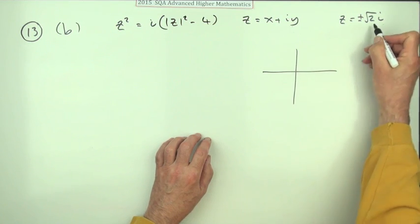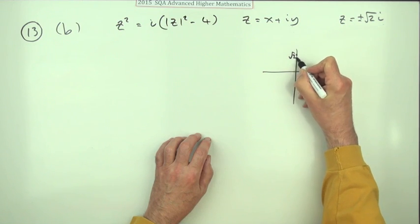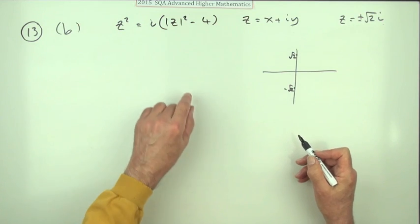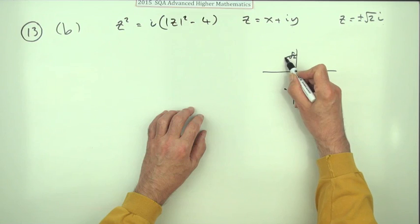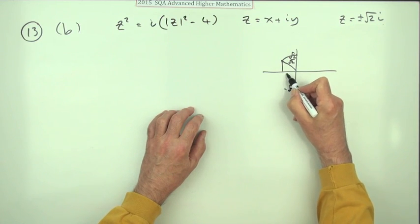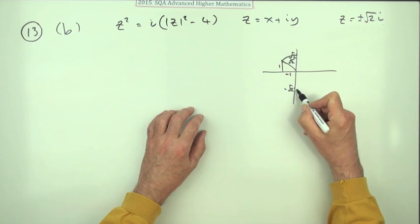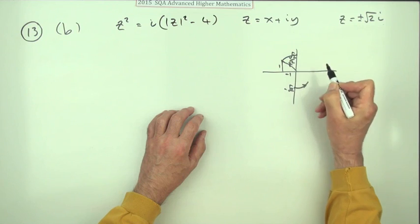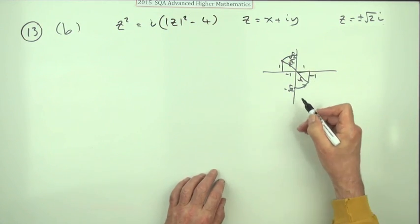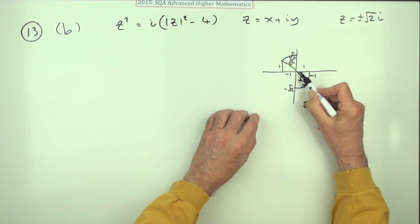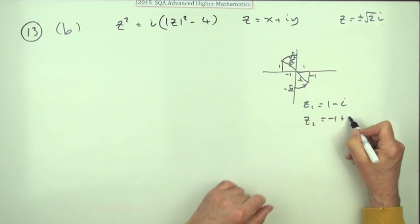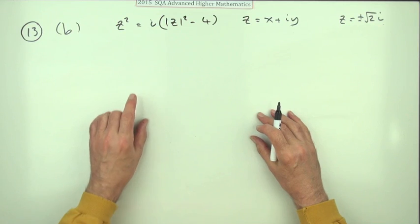If you take the previous answers — root 2·i and negative root 2·i, which lie on the imaginary axis — and rotate them by 45 degrees, root 2 stays as the modulus, making it half a square, so that's one across and one up. Rotating the other through 45 degrees gives one across and one down. That suggests the two answers are z₁ equals 1 minus i and z₂ equals negative 1 plus i. However you can't just go on intuition — you have to demonstrate it.